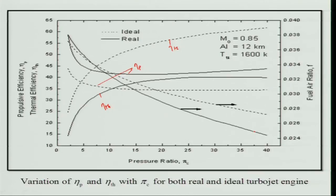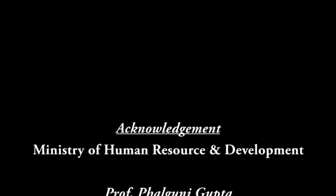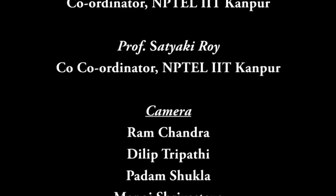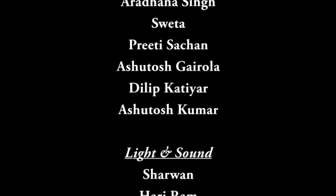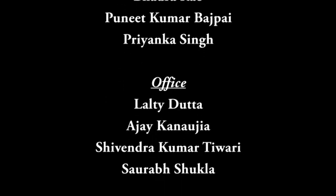The fuel-air ratio in the real cycle may be lower at higher pressure ratios but higher at lower pressure ratios compared to the ideal, and it decreases with pressure ratio. Overall, incorporating more losses that have been neglected would give even higher TSFC and lower specific thrust. With this, we will stop here and take a detailed example in the next lecture. Thank you very much.